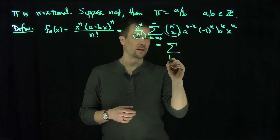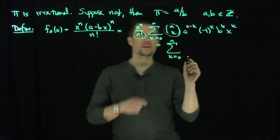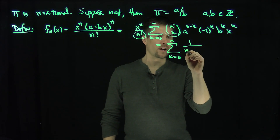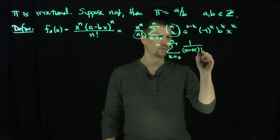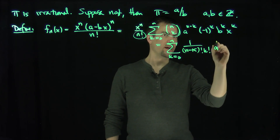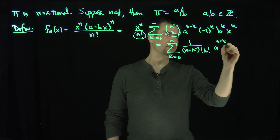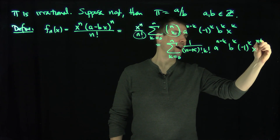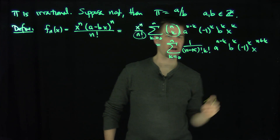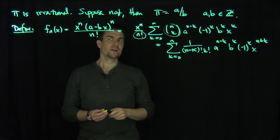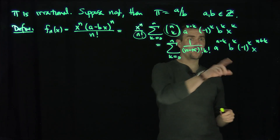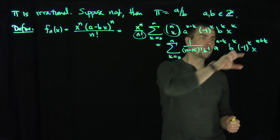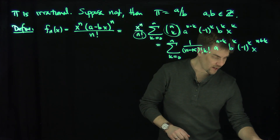And now the kicker is that if I look at this n factorial and this n choose k, what that simplifies to — this is going to simplify to the sum: k goes from zero up to n. Then the n factorial will cancel. I'm going to get 1 over (n minus k) factorial, k factorial, a to the n minus k, b to the k, negative one to the k, x to the n plus k. And now I can observe from this that this function has a zero of at least order n at the origin.